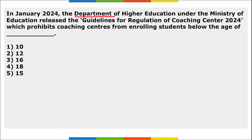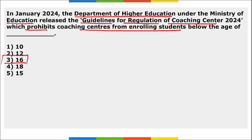The Department of Higher Education under the Ministry of Education released the Guidelines for Regulations of Coaching Centers 2024. These guidelines prohibit coaching centers from enrolling students below the age of 16. This decision was taken in view of rising student suicides, high fees at coaching centers, and mental pressures that students face.